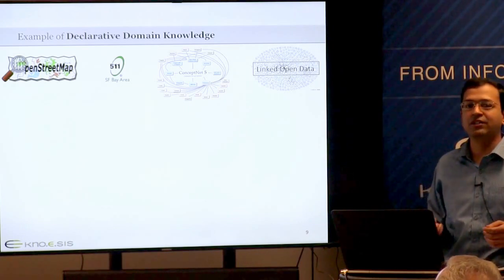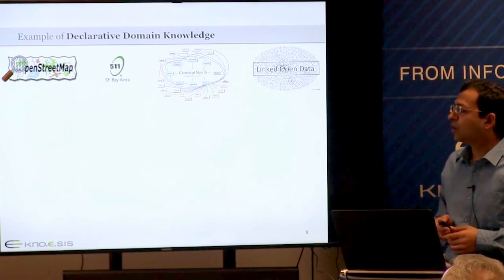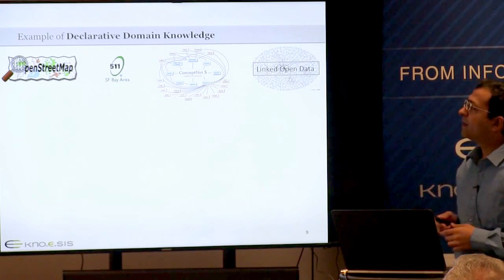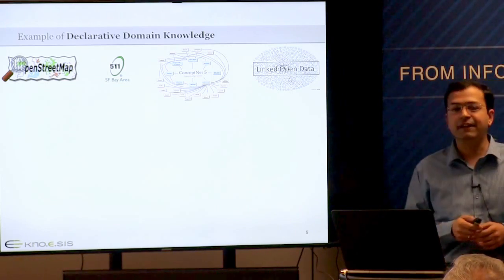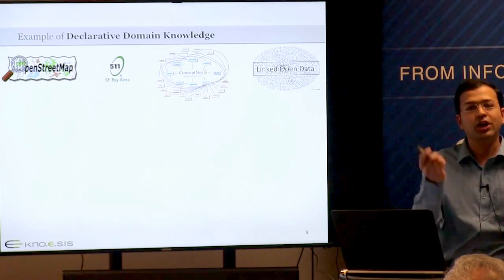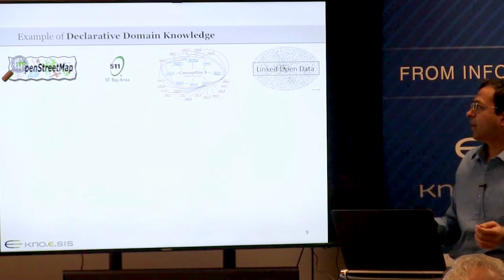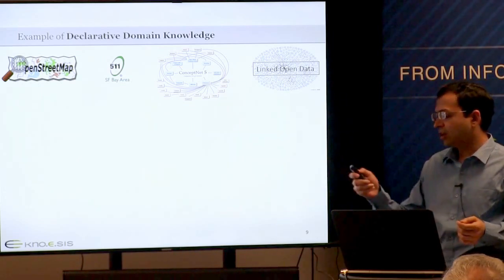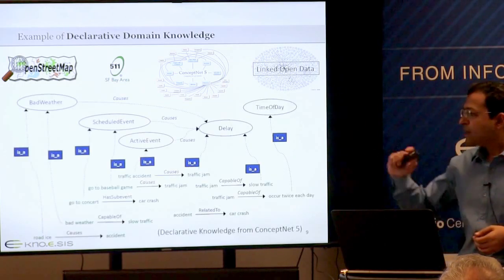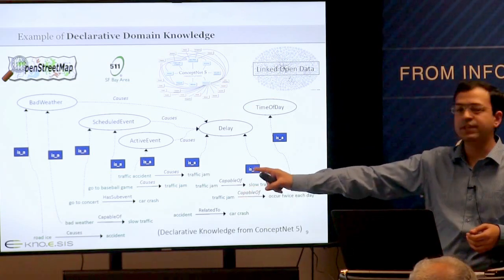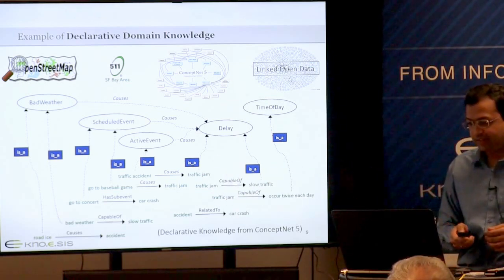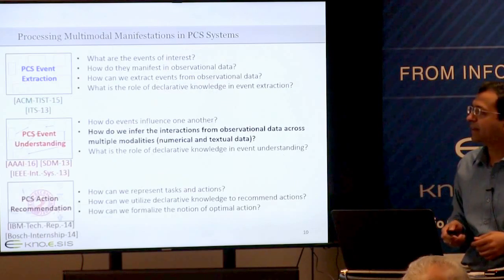Declarative knowledge includes OpenStreetMaps for location and points of interest, the 511 event hierarchy for traffic-related events, ConceptNet for common-sense related knowledge, and linked open data as a big collection of knowledge. ConceptNet is particularly useful because it has a lot of common-sense knowledge, and we have used all these things in my dissertation work.